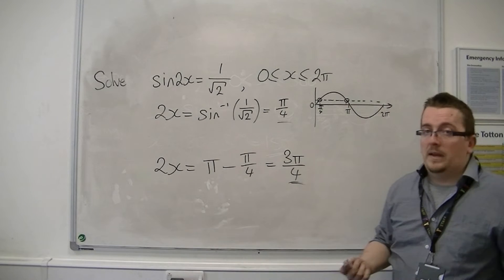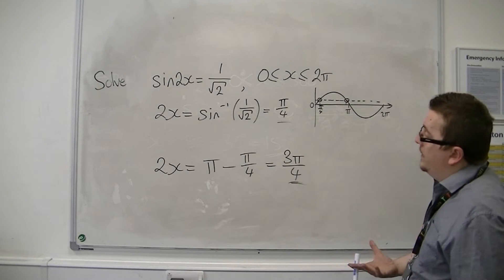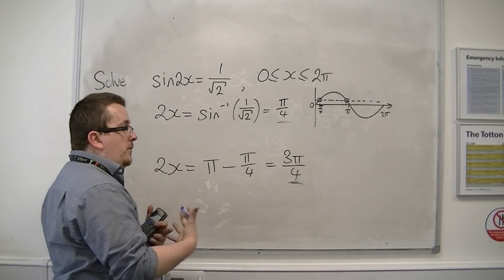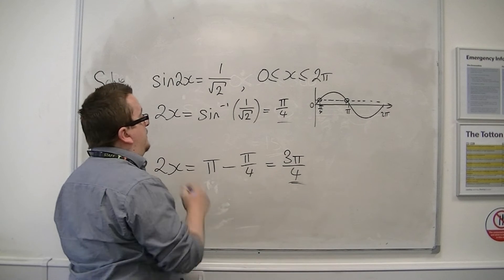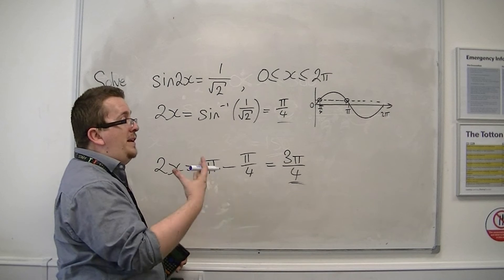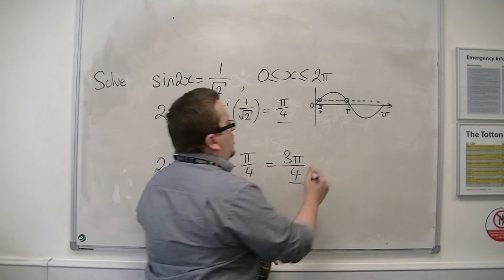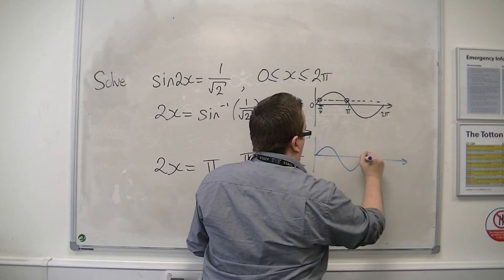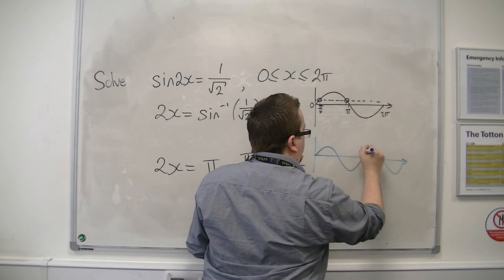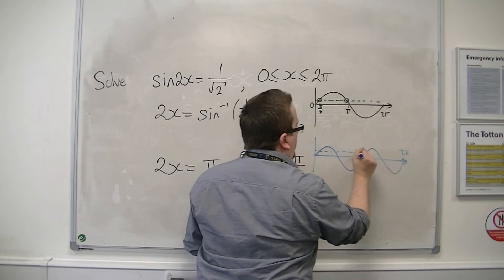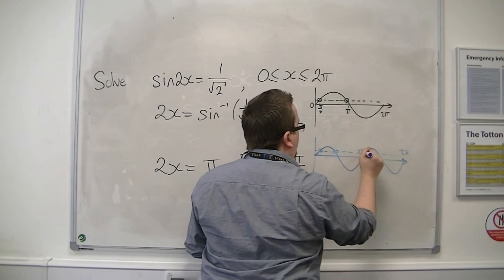So that means that if it has now a period of pi, I'm going to be able to add pi on to get the other solutions that I need. Because I'm not just looking for two solutions anymore. I must be looking for four. The actual curve would look like this.